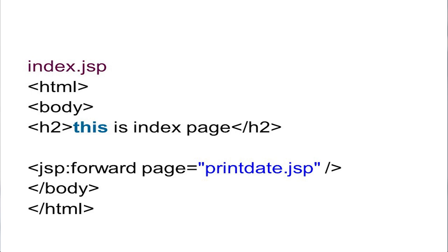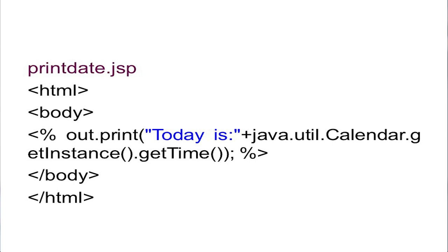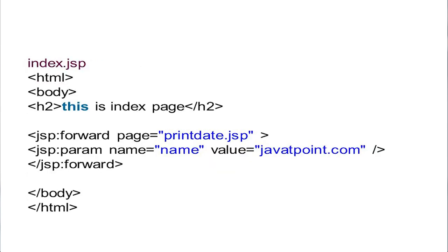When this executes, printdate.JSP will start to run. In printdate.JSP, the output statement is %out.print displaying 'Today is' as a string, then java.util.Calendar.getInstance().getTime() to get the time. So simultaneously, the time and date will be displayed. This is the forward page example — without parameter, because we are not passing any parameter.